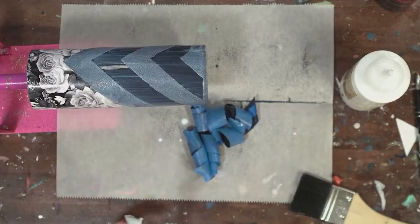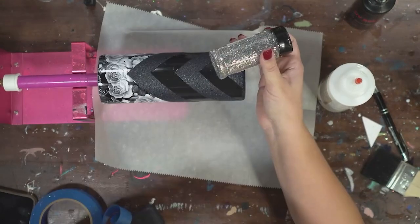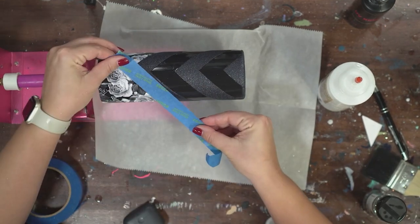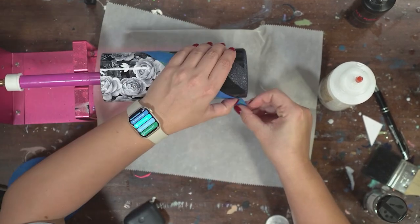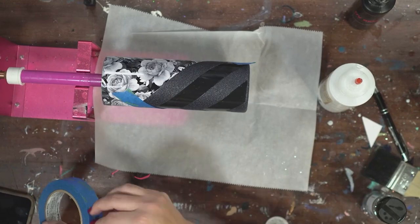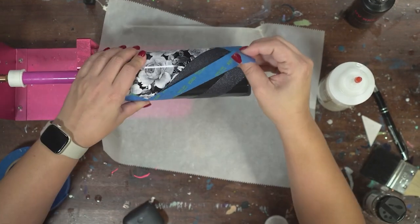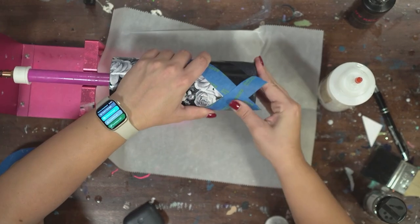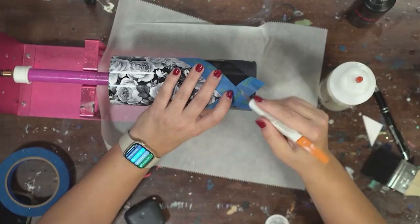I let that dry for two hours and then I went in with my silver glitter. I'm using a different cut—actually I decided to go with a thicker cut, still a fine glitter but it's a 0.015 instead of a 0.008, so it's a little bit thicker and I really do like the dimension that it gave it.